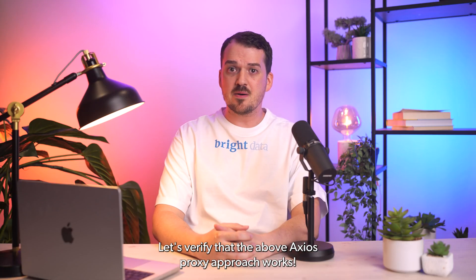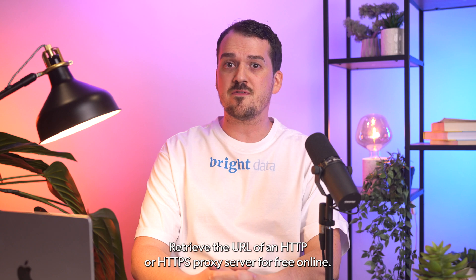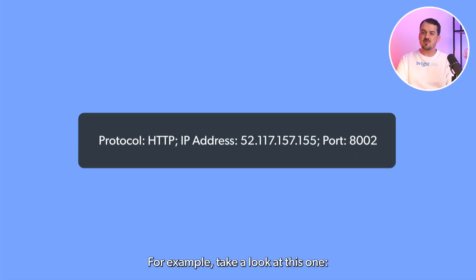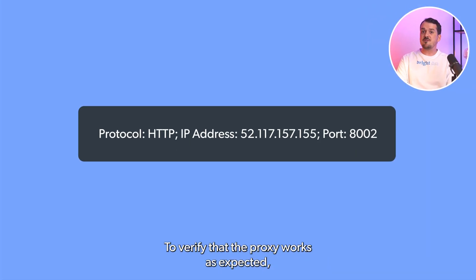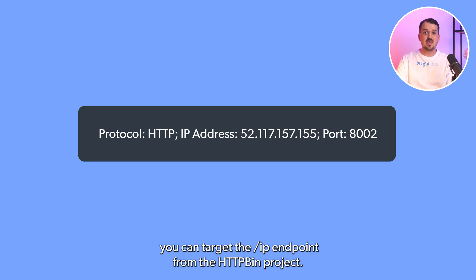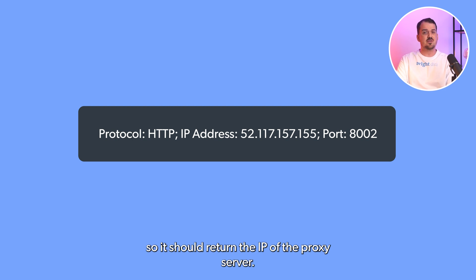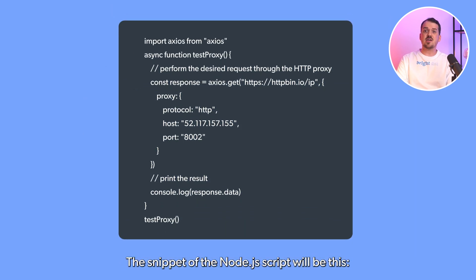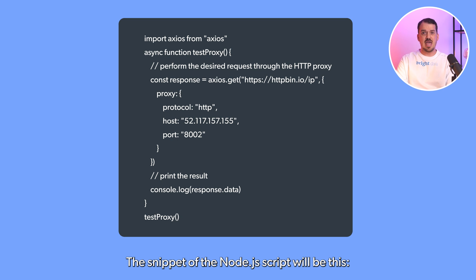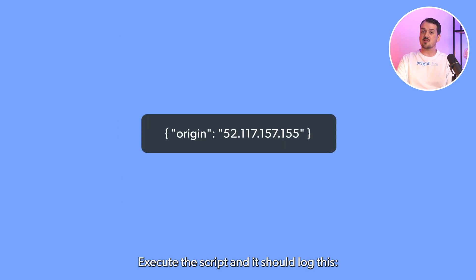Let's verify the above Axios proxy approach works. Retrieve the URL from an HTTP or HTTPS proxy server for free online — for example, take a look at this one. To verify that the proxy works as expected, you can target the /ip endpoint from the HTTPBin project. This public API returns the IP of the incoming request, so it should return the IP of the proxy server. The Node.js script snippet will be this — execute the script and it should log this.